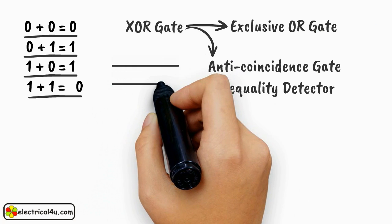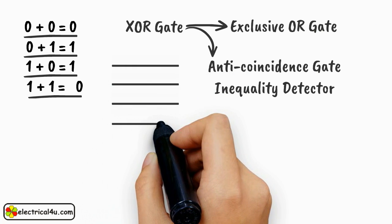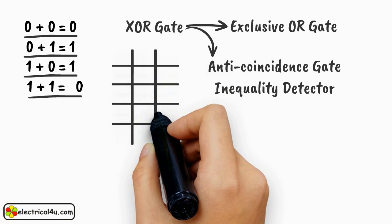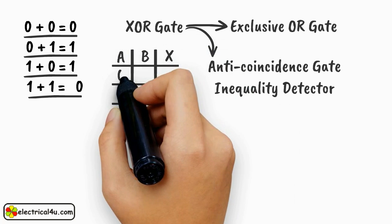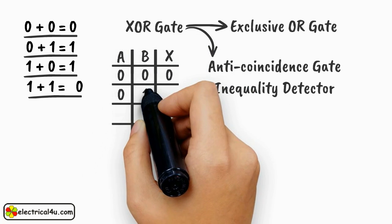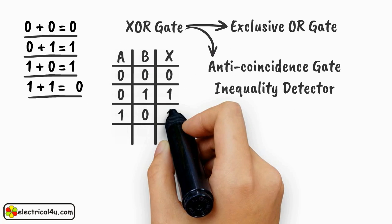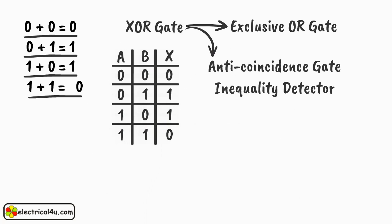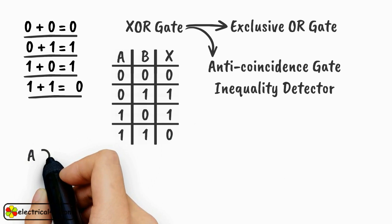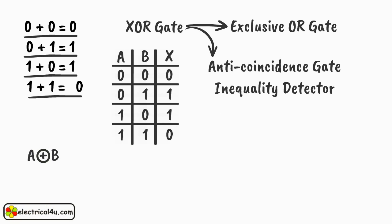The truth table of XOR gate is shown here. The binary operation of this truth table is known as exclusive OR operation and it is represented as A circled plus B.